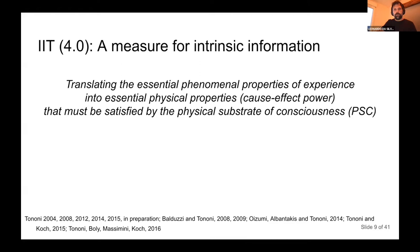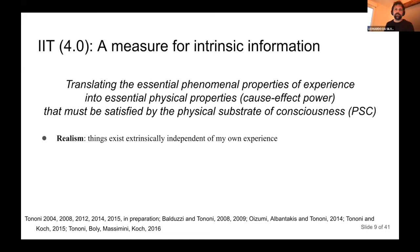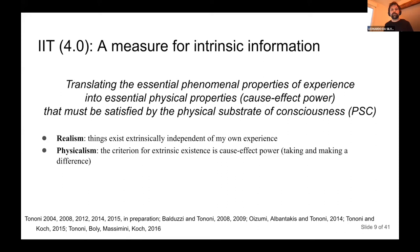The key step is to translate these phenomenal properties into physical properties — here the science begins. We need a few assumptions. The first is that things exist extrinsically, independent of my experience, because otherwise I'd have to do the whole theory on my own experience alone, which is not practical. The second is physicalism: the criterion for existence is cause-effect power — you have to be able to make a difference for any physical system that is a candidate substrate of consciousness.